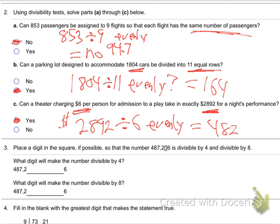Let's go to number three. Place a digit in the square if possible so that the number 487,2 something 6 is divisible by 4 and divisible by 8. In other words, they're saying, what digits can you put in there? Can you put a zero? If I put in a zero there, is that divisible by 4? If you take 487,206, does it divide by 4 evenly? You can do it on your calculator. It's no. So that doesn't work.